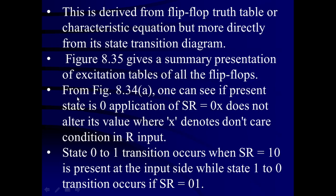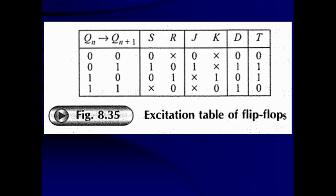The state 0→1 transition occurs when SR=10 (set condition) is present at input. The 1→0 transition (reset condition) occurs when SR=01 is applied. This is the excitation table for various types of flip-flops. If the previous state is 0 and next state is 0, S=0 and R=don't care (0x). If 0→1, S=1, R=0. If 1→0, reset condition 0,1 is required. The flip-flop in state 1 retains that state with either no-change (00) or set (10) condition — so x0 is required.